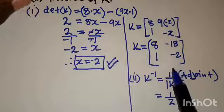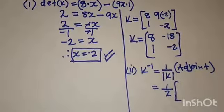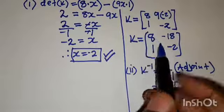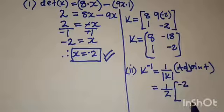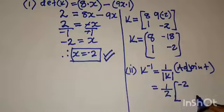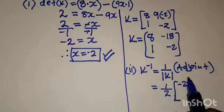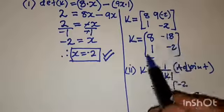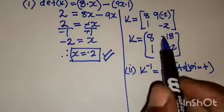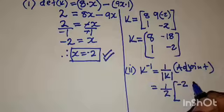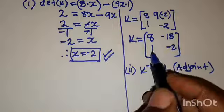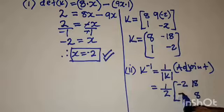To find the adjoint of a 2 by 2 matrix K, you swap the major diagonal numbers: negative 2 takes the place where 8 was, and 8 takes the place of negative 2. Then for the minor diagonal numbers, you multiply each by negative 1. So negative 18 times negative 1 gives positive 18, and 1 times negative 1 gives negative 1. This gives us the adjoint of matrix K.